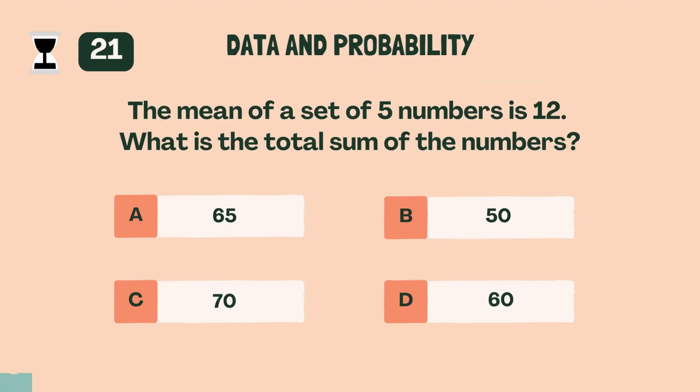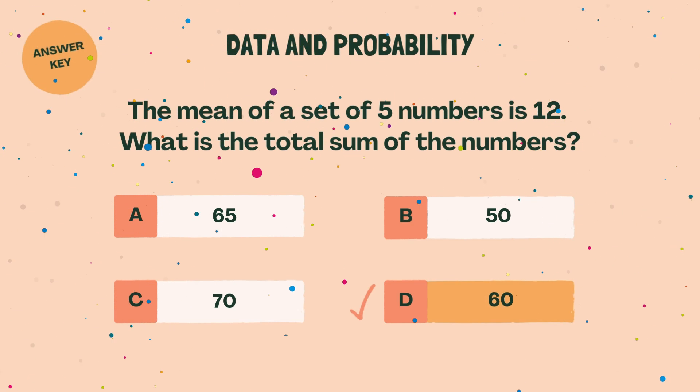The mean of a set of five numbers is 12. What is the total sum of the numbers? D, 60.